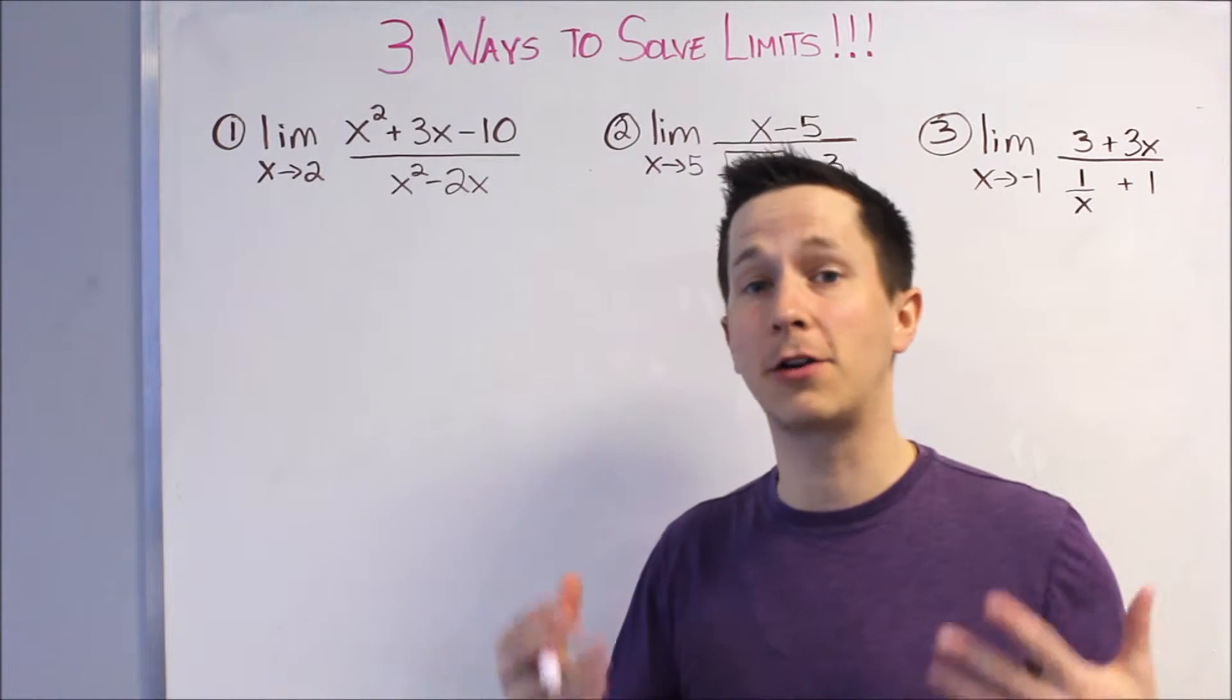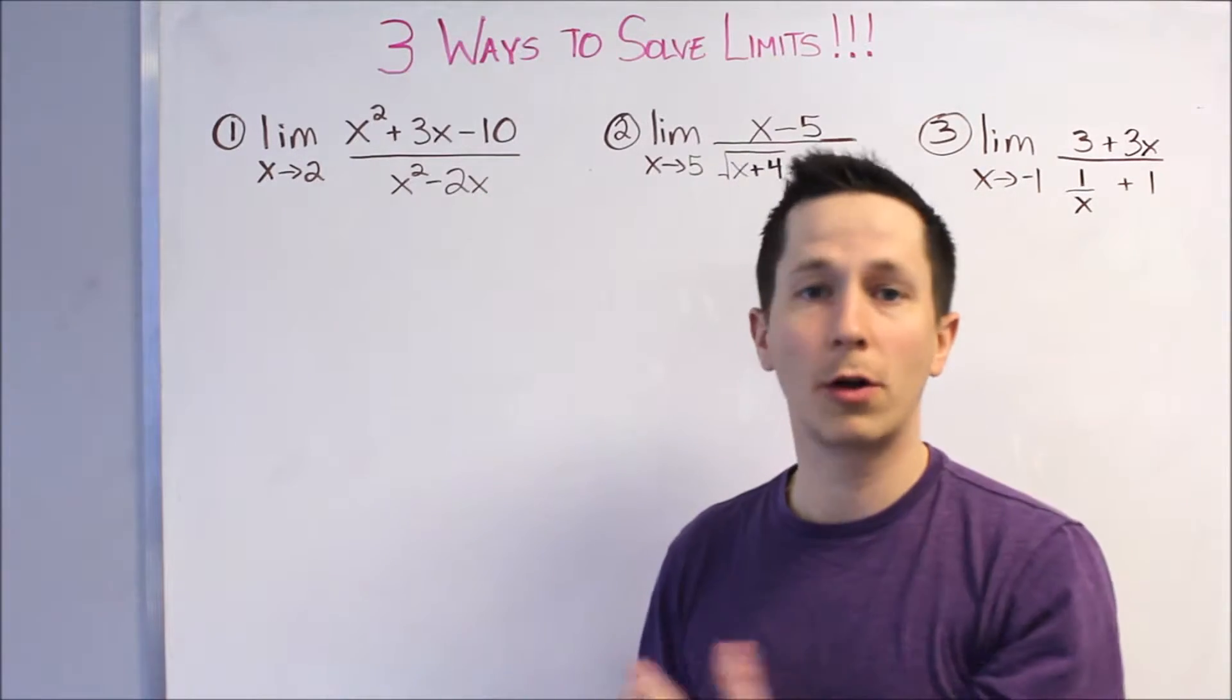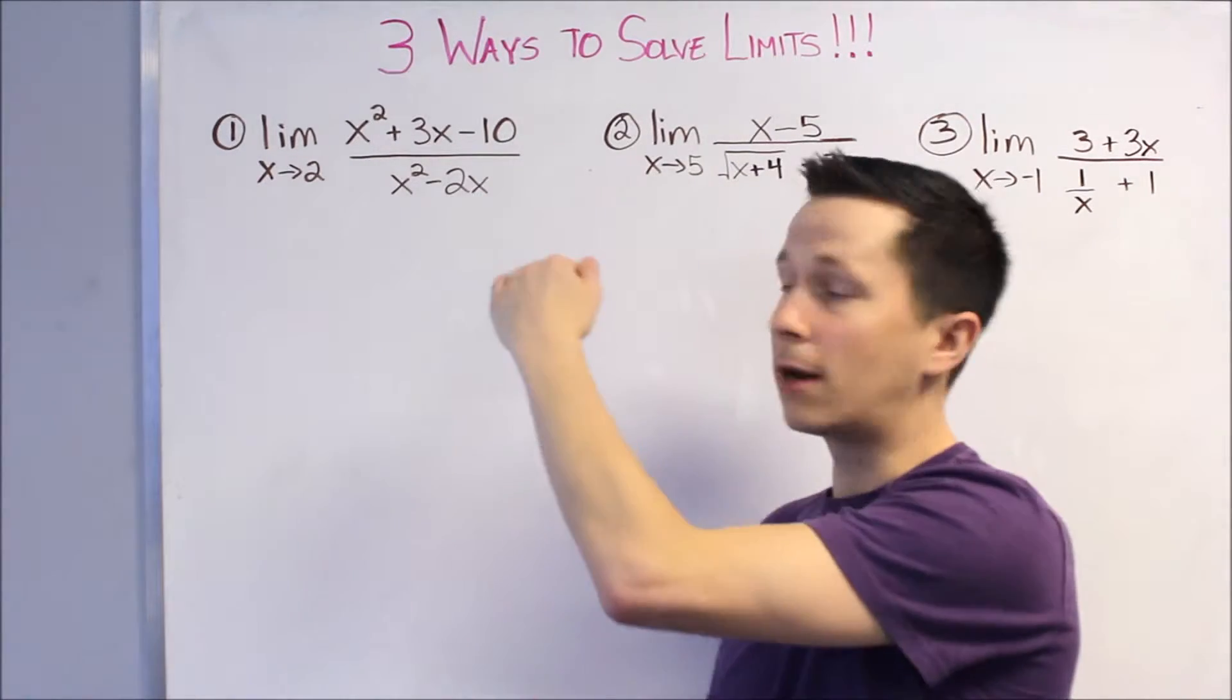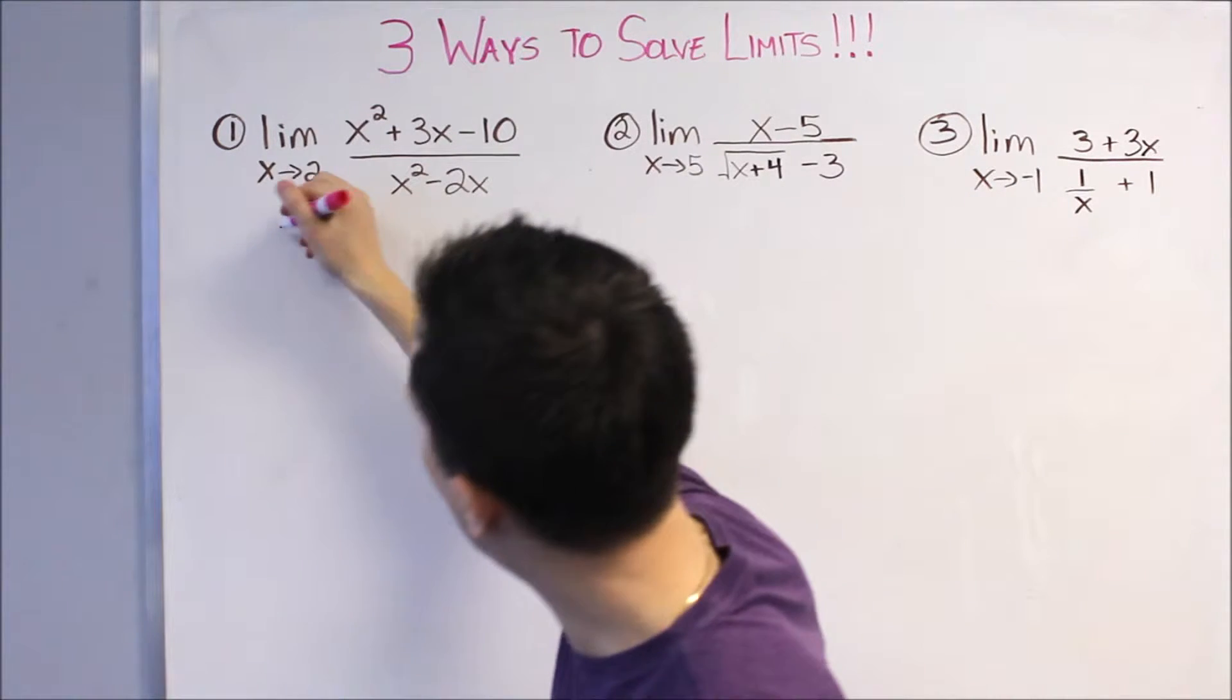So, the first method I'll call factor and cancel. That means it's usually a polynomial over a polynomial or a rational function. We can factor the top and bottom and hopefully cancel our problem.